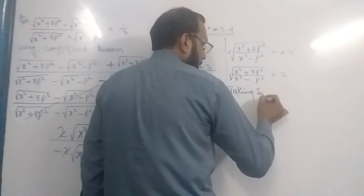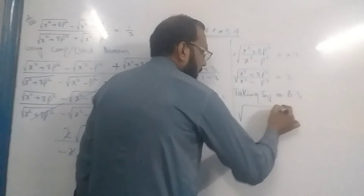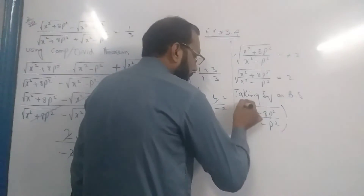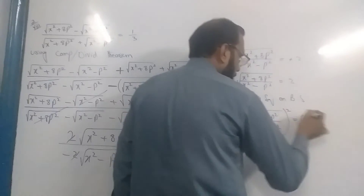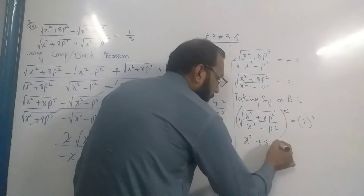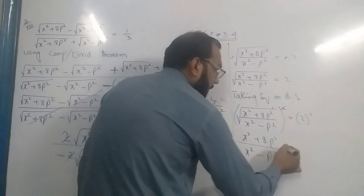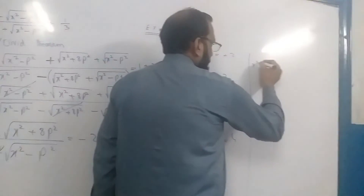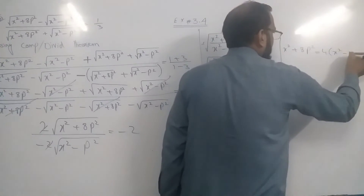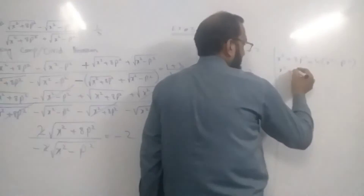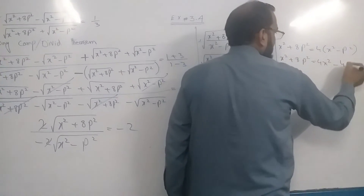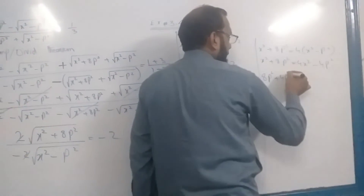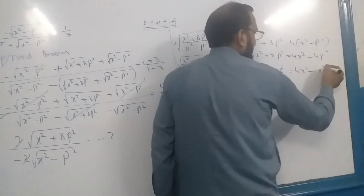Taking square on both sides. So the square is: (x² + ap²) over (x² - p²), whole squared, equal to 2 plus square. Leave it again: (x² + ap²) divided by (x² - p²) equal to 4, because dividing gives 1 times (x² + ap²) equal to 4(x² - p²). So x² + ap² = 4x² - 4p². Then minus 4ap² plus 4p² plus x² — this is the value of R minus x².